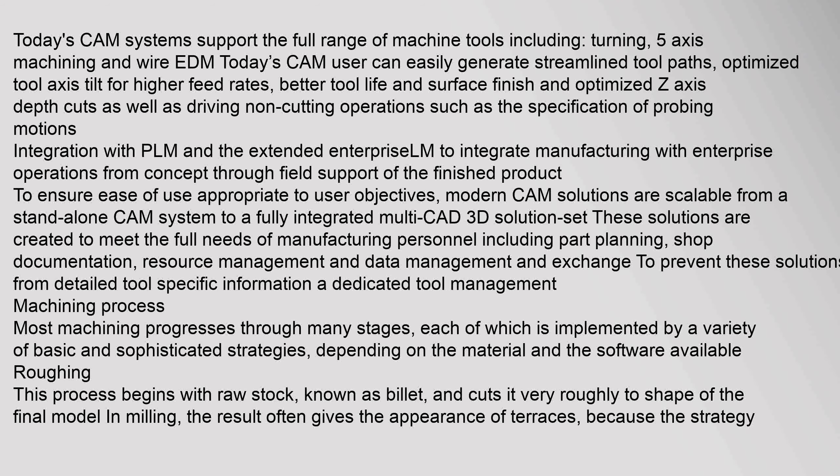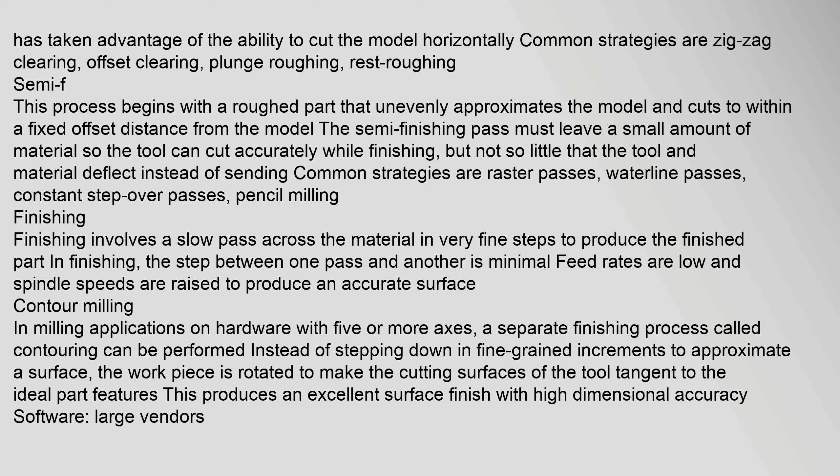Most machining progresses through many stages, each implemented by a variety of basic and sophisticated strategies depending on the material and software available. Roughing is the first process, which begins with raw stock known as billet and cuts it very roughly to the shape of the final model. In milling, the result often gives the appearance of terraces, because the strategy takes advantage of the ability to cut the model horizontally. Common strategies are zig-zag clearing, offset clearing, and plunge roughing.